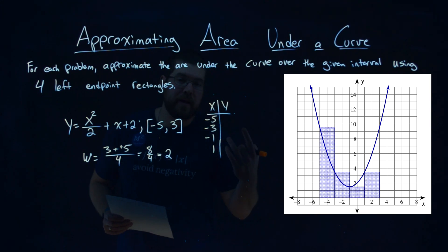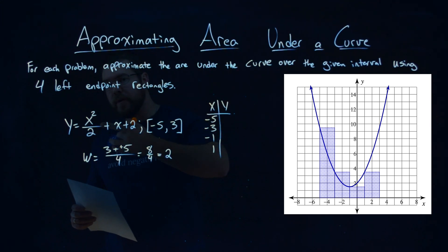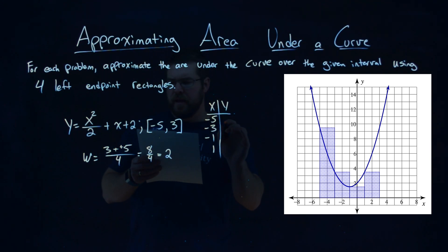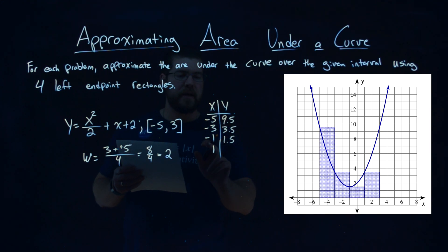With these values, I plug them back into my original equation. I did that for you here, and we get 9.5 when negative 5 is put in. We have 3.5 as well, 1.5 when negative 1 is put in, and when the input is 1, we have a positive 3.5 again.